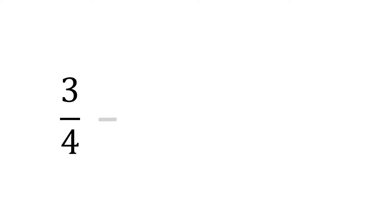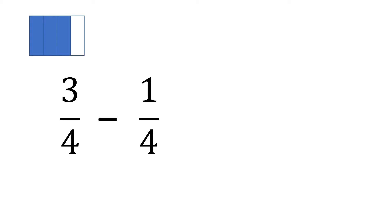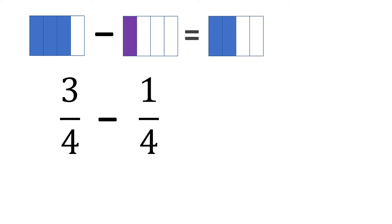3 fourths minus 1 fourth. In order to solve this, let's picture out first how these two look like. We have 3 shaded parts out of 4 — that's 3 fourths — minus 1 shaded part out of 4. This means we want to remove 1 shaded part from 3 fourths, and we have 2 fourths. So the expected answer is 2 fourths.